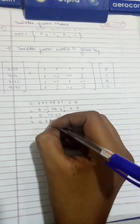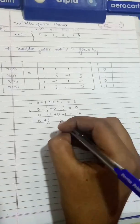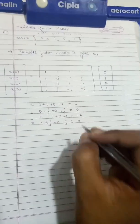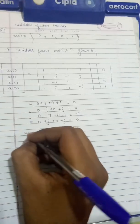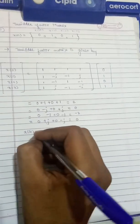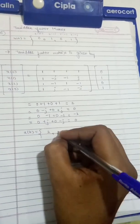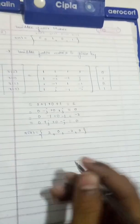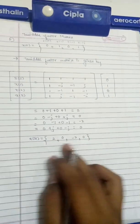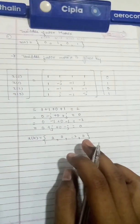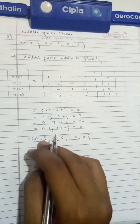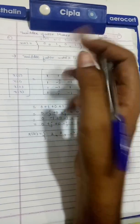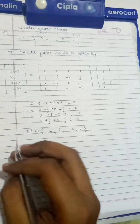The fourth element: 0 + j + 0 - j = 0. So the resultant X of K is [2, 0, -2, 0]. This is the final X of K found by using the twiddle factor matrix. Now let us solve some more problems.